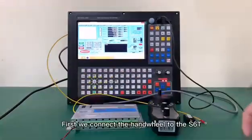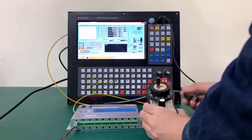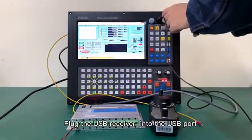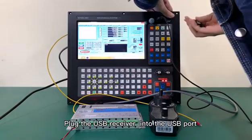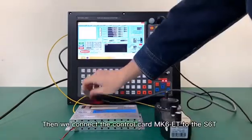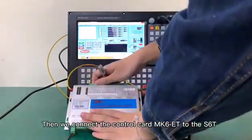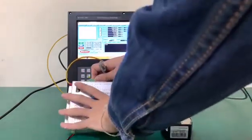First, we connect the handwheel to the S-6-T. Plug the USB receiver into the USB port. Then we connect the control card MK-6-ET to the S-6-T with an ethernet cable.